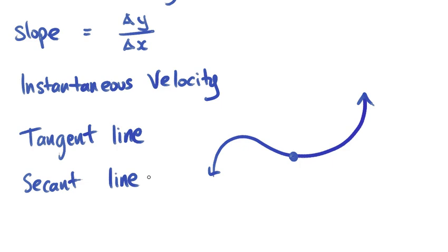So a tangent line will, and I'm just approximating this, will just touch that one point. And it does a very good job at estimating what the slope is at that one point.